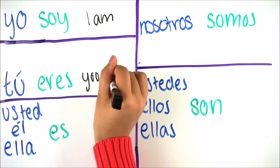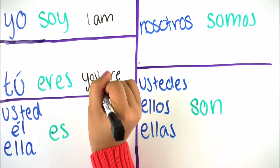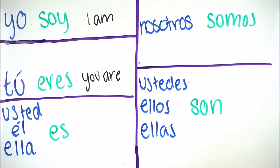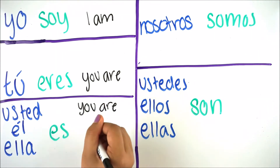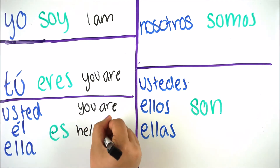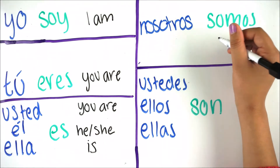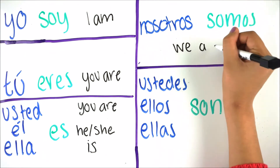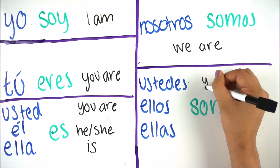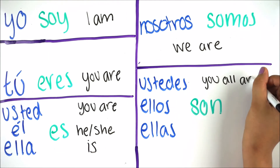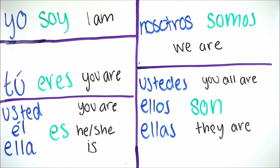So yo soy means 'I am,' tú eres means 'you are.' Usted es also means 'you are,' and we'll talk about the differences later. Él or ella es means 'he or she is.' Son means 'you all are,' and ellos or ellas son means 'they are.'